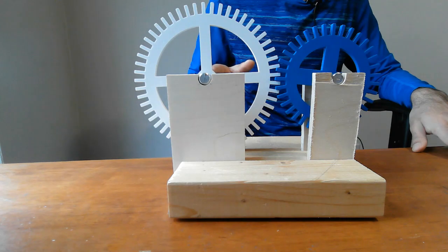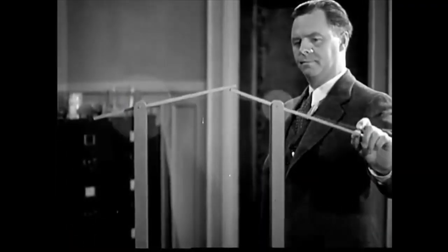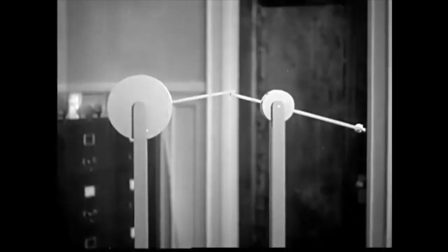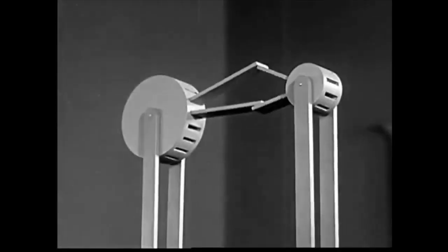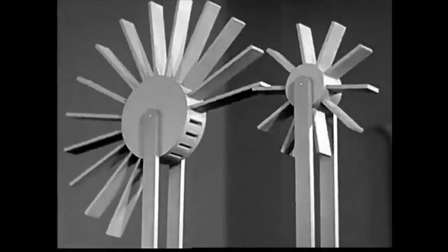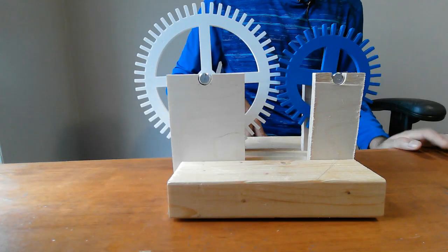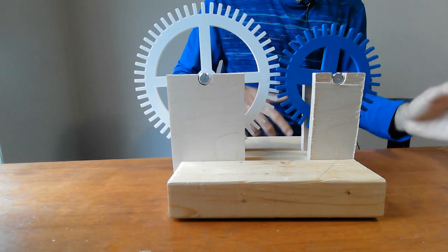The short arm moves one fourth the distance but we get four times the force. If we want continuous motion we need more arms. Now we have levers that turn. The larger paddle wheel makes fewer turns but it delivers more force.